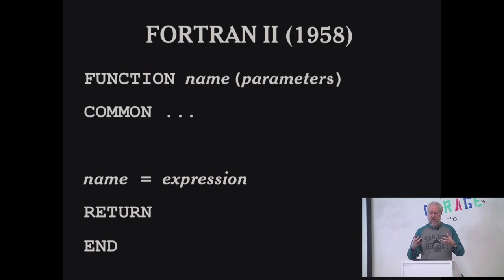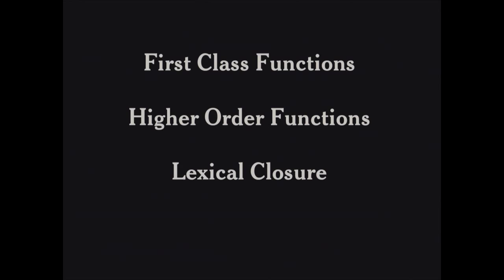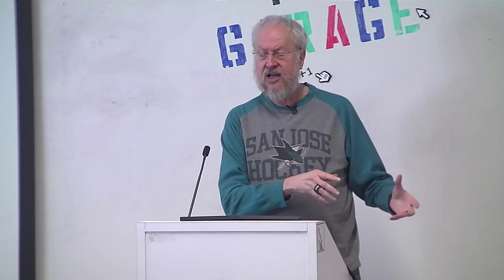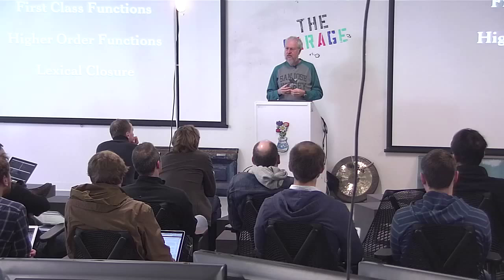What we call functional programming only becomes interesting when we have functions as first-class objects — we can pass a function as a parameter, store it in a variable, or put it in a field in a record. Then we can have higher-order functions that operate on other functions. This all became really good with the invention of Scheme, which introduced lexical closure — any function has access to the variables in the outer function. The first mainstream language to have this feature was JavaScript.